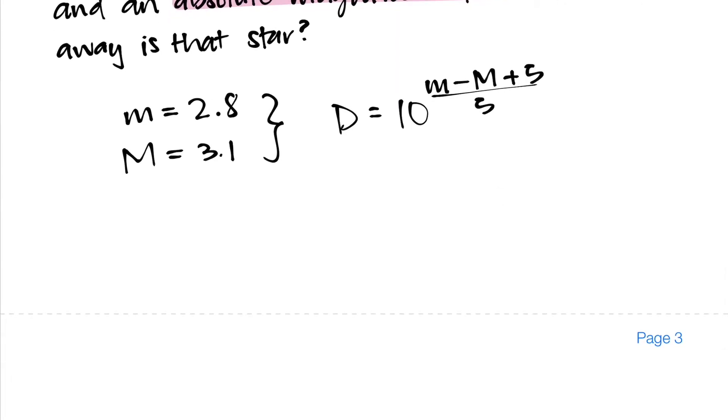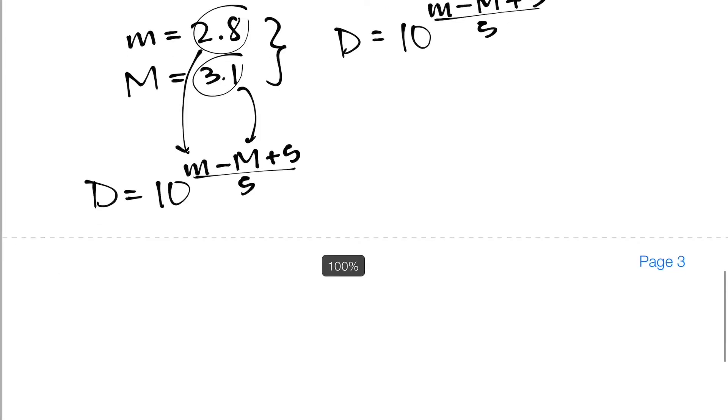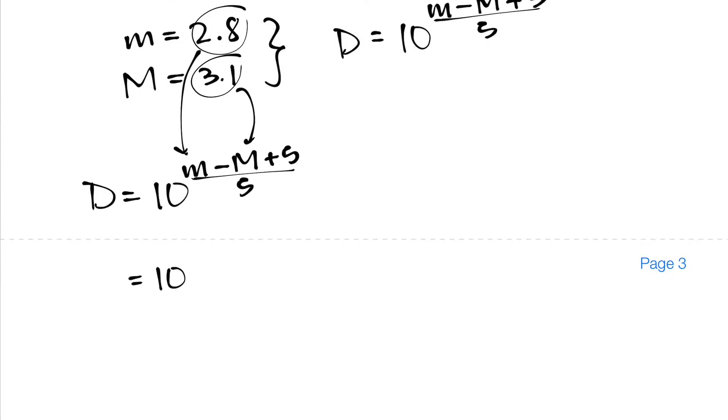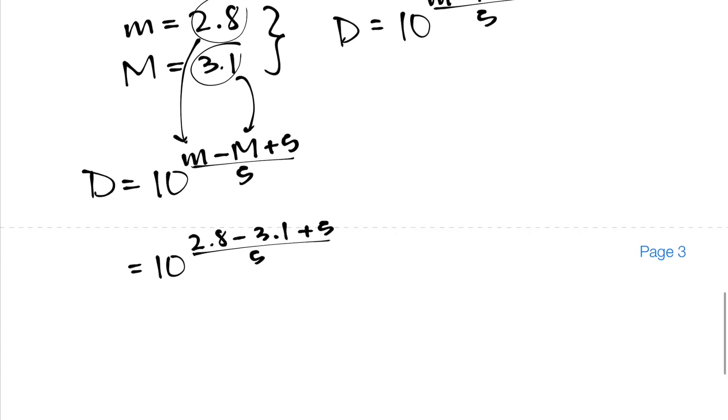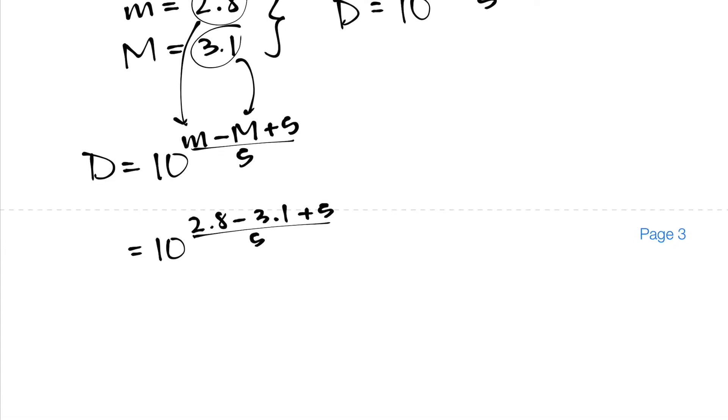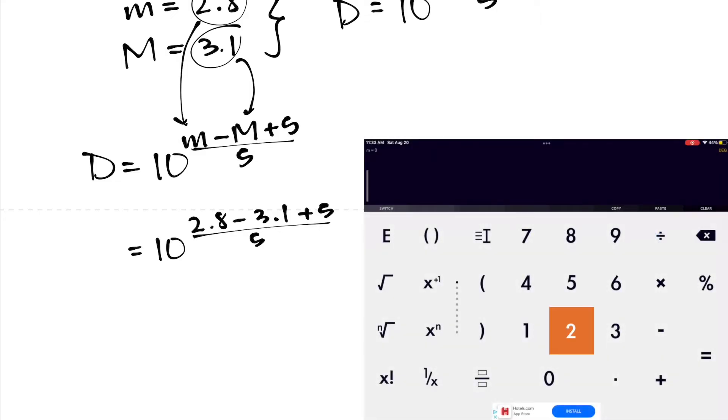So I'm going to rewrite the equation itself where we have D equals 10 to the power of m minus M plus 5 all over 5. But now we also know that we can plug in 2.8 for lowercase m and 3.1 for uppercase M. So in the next step I will go ahead and replace those variables in the exponent on my 10 with the numbers that they represent instead. So we have 2.8 minus 3.1 plus 5 all over 5.